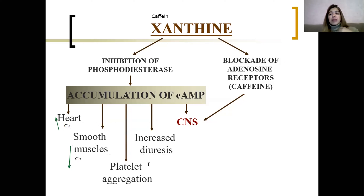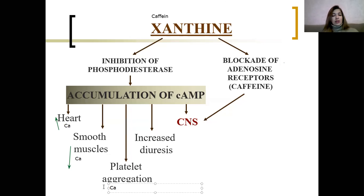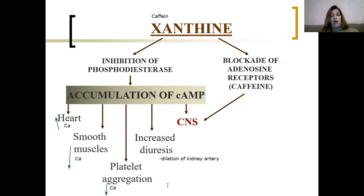For platelets, accumulation of cAMP leads to less calcium, so less aggregation. Regarding diuresis, caffeine will have the effect of increased diuresis because of dilation of kidney vessels. In the CNS, the effect will be stimulating.